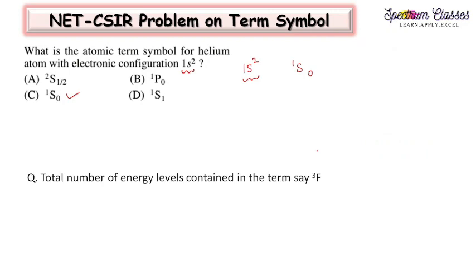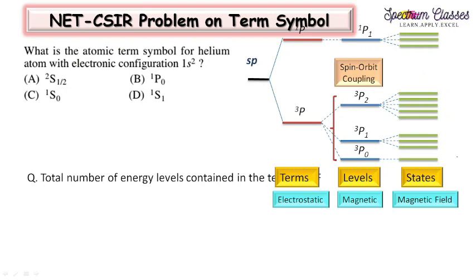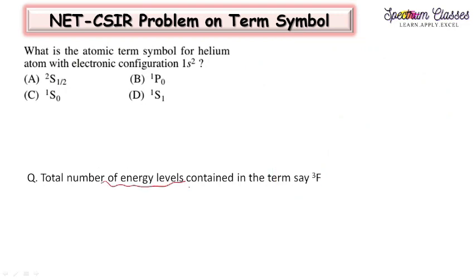The next question: what is the total number of energy levels contained in the term state ³F? Some students get confused about what is called a term and what is called an energy level. So before solving this question, I am elaborating: this is the term, and these are the levels in which the total angular momentum J participates. These are the degeneracy or number of microstates, having value 2J+1.